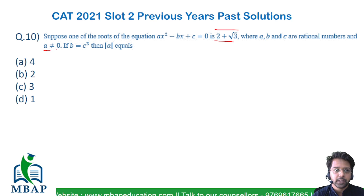b and c are rational numbers, a ≠ 0, and importantly, b = c³. That's an important hint they've given you.